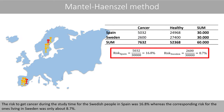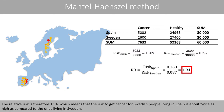The risk to get cancer during the study period for Swedish people in Spain was 16.8%, whereas the corresponding risk for those living in Sweden was only 8.7%. The relative risk is therefore 1.94, which means that the risk to get cancer for Swedish people living in Spain is about twice as high as compared to those living in Sweden.